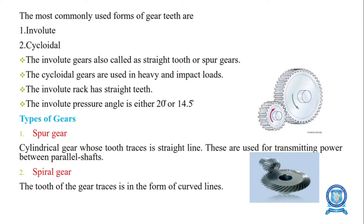Commonly used forms of gear teeth are involute gear tooth and cycloidal gear tooth. Involute gears are also called straight tooth gears or spur gear. Cycloidal gears are used in heavy and impact loads. Involute rack has straight teeth, and the involute pressure angle is either 20 degrees or 14.5 degrees.